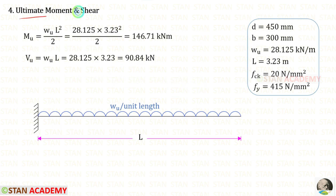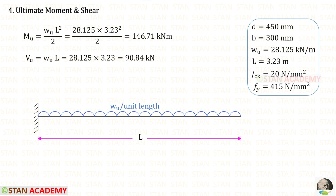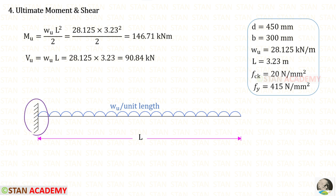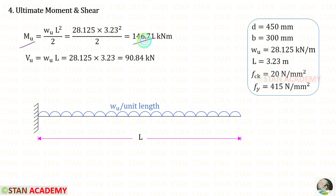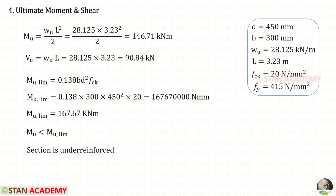We now find the ultimate moment and shear. For a cantilever beam with uniformly distributed load over the full span, the maximum moment occurs at the fixed end and equals wu × L² / 2. Applying wu = 28.125 and the effective span L = 3.225 m, we get the ultimate moment as 146.71 kN·m and the ultimate shear force as 90.84 kN.